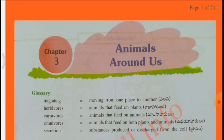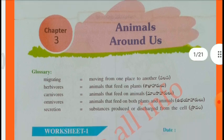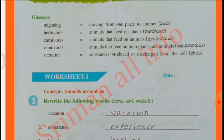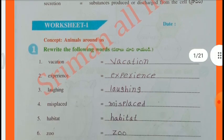we have to learn 4th class Our World Workbook Worksheets, Chapter 3: Animals Around Us. Glossary: Migrating - Moving from one place to another. Herbivores - Animals that feed on plants. Carnivores - Animals that feed on animals. Omnivores - Animals that feed on both plants and animals. Secretion - Substances produced or discharged from the cell.